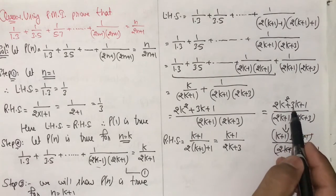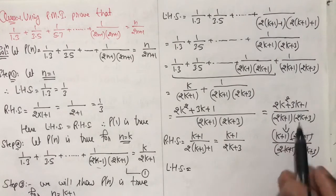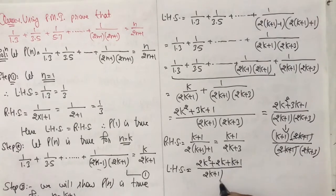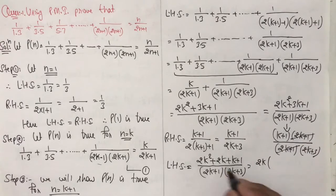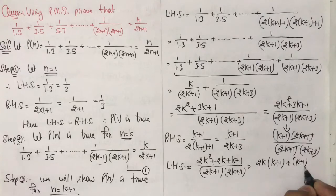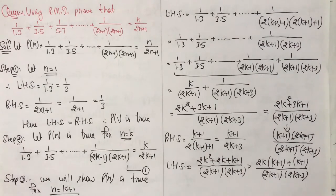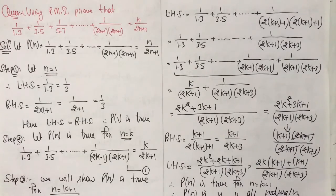LHS equals RHS. Therefore P(n) is true for n = k+1. Since P(1) is true and whenever P(k) is true P(k+1) is also true, therefore by the Principle of Mathematical Induction, P(n) is true for all natural numbers. Hence proved.